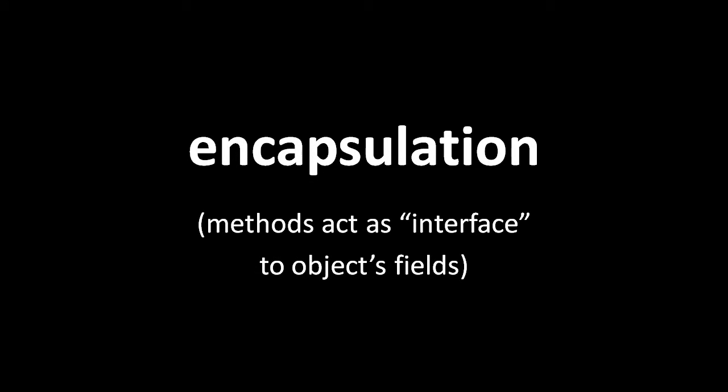The first principle of object-oriented programming is called encapsulation. The idea of encapsulation is simply that the fields of an object or instance should only be read or written by methods of that instance's class. So in the cat class, the principle of encapsulation says that the number of lives field of a cat object should only be read and written by methods of the cat class, not by methods of any other class or by any other code.